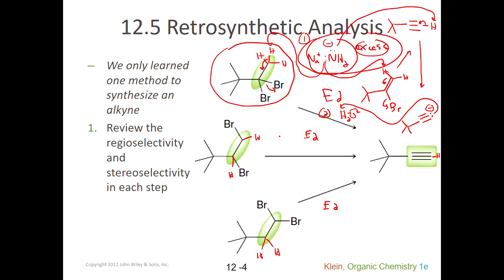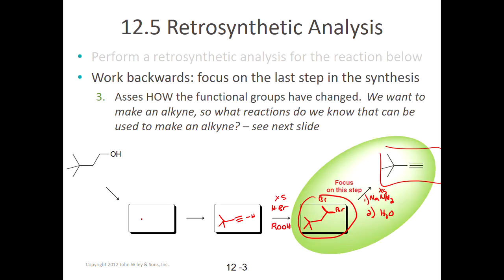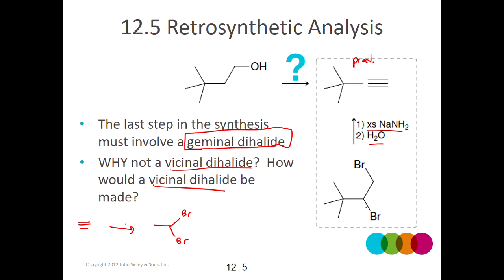The idea here is: even though there are multiple options for making an alkyne, only one makes sense synthetically, because I can make the geminal dihalide from a different compound and fill in the rest of the gaps. We're working backwards from the final product to figure out what could make that product, what reaction conditions are necessary, and how to get from the reactants.